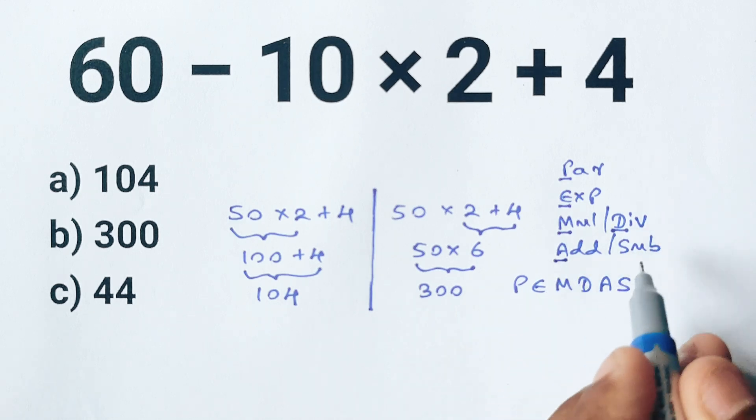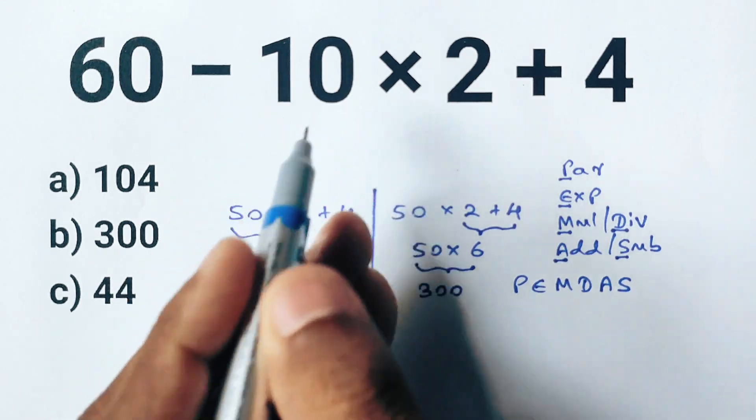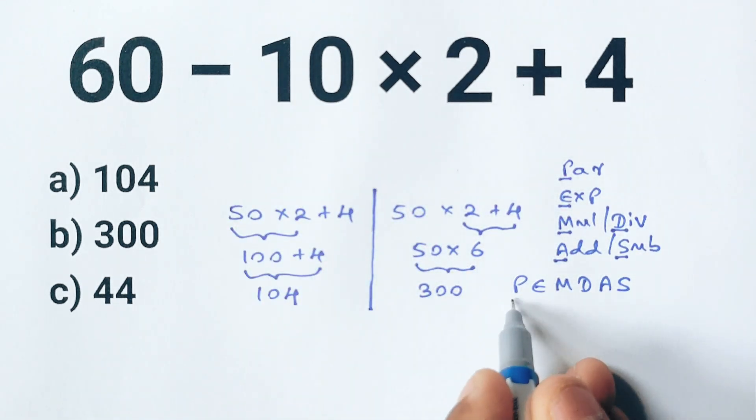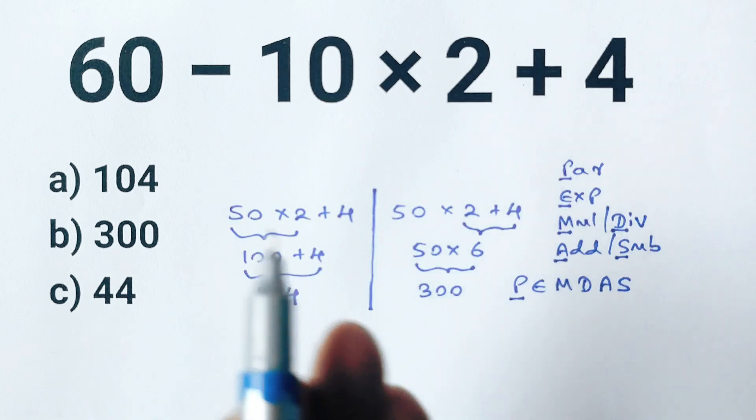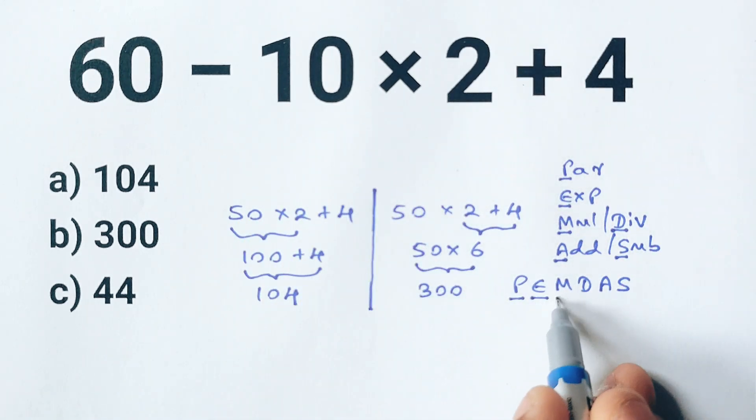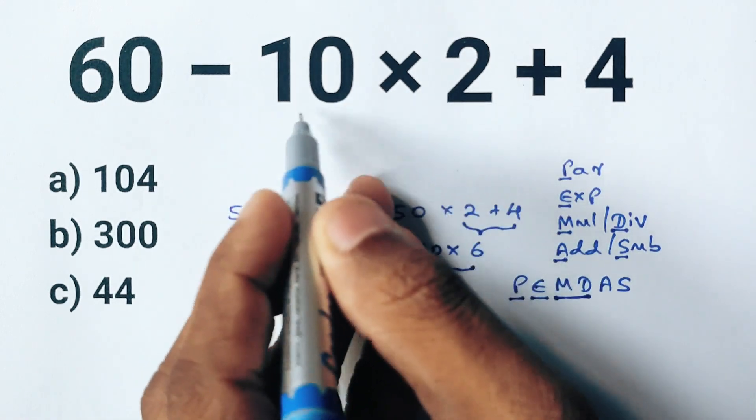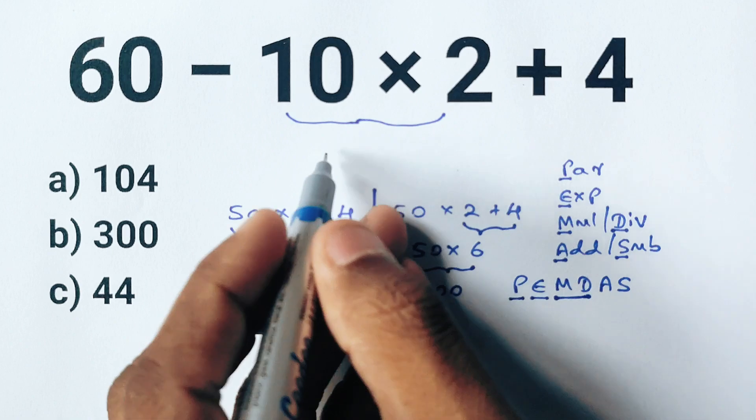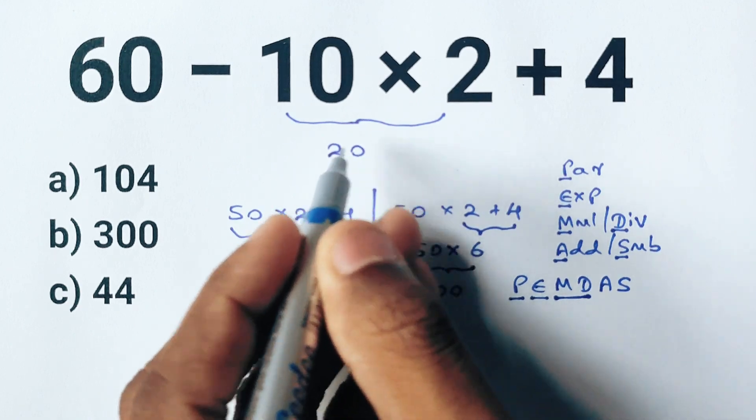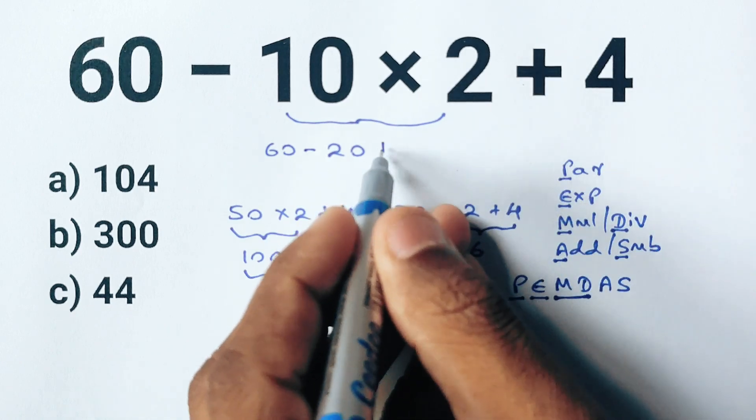Now let's apply PEMDAS to solve this expression correctly. Starting with parenthesis, we don't have any. Next, exponents: none here either. Now comes multiplication and division from left to right. We see 10 times 2, so let's do that first. 10 times 2 is 20. Now the expression becomes 60 minus 20 plus 4.